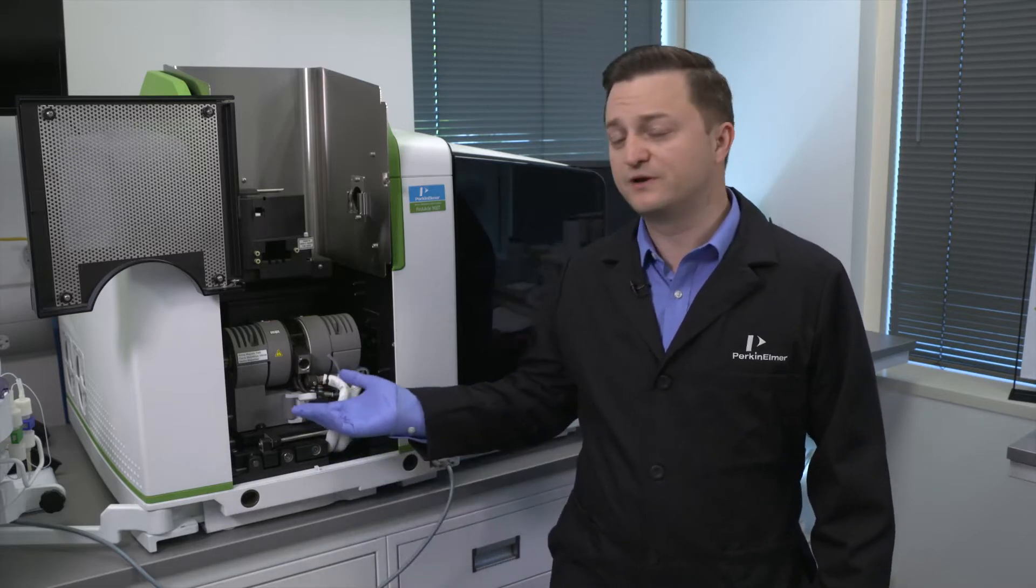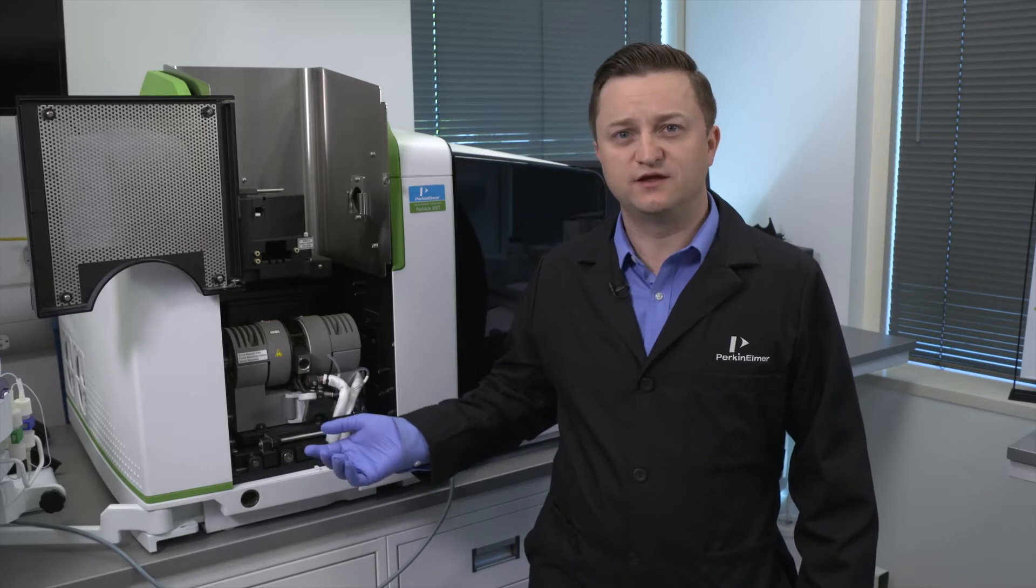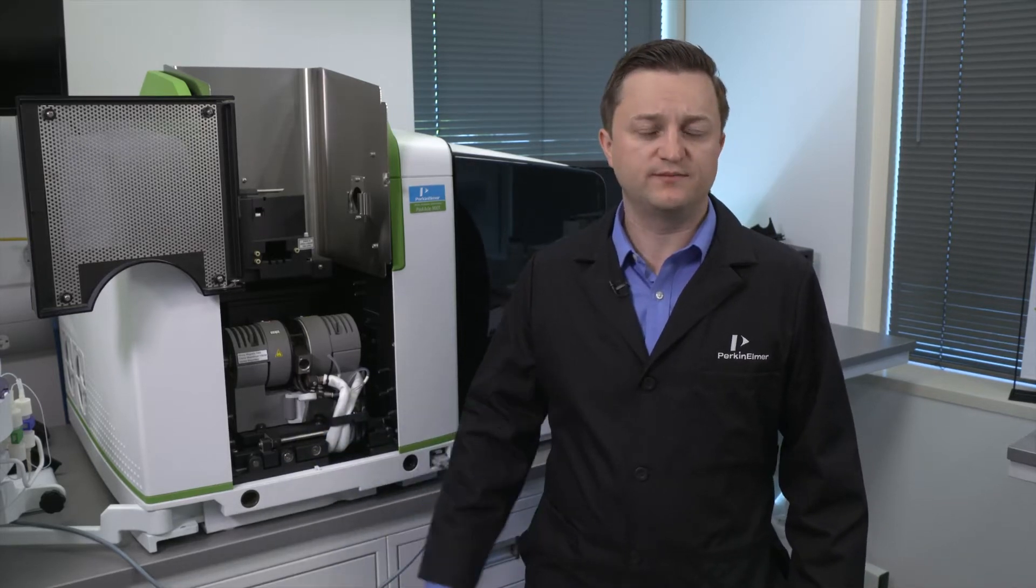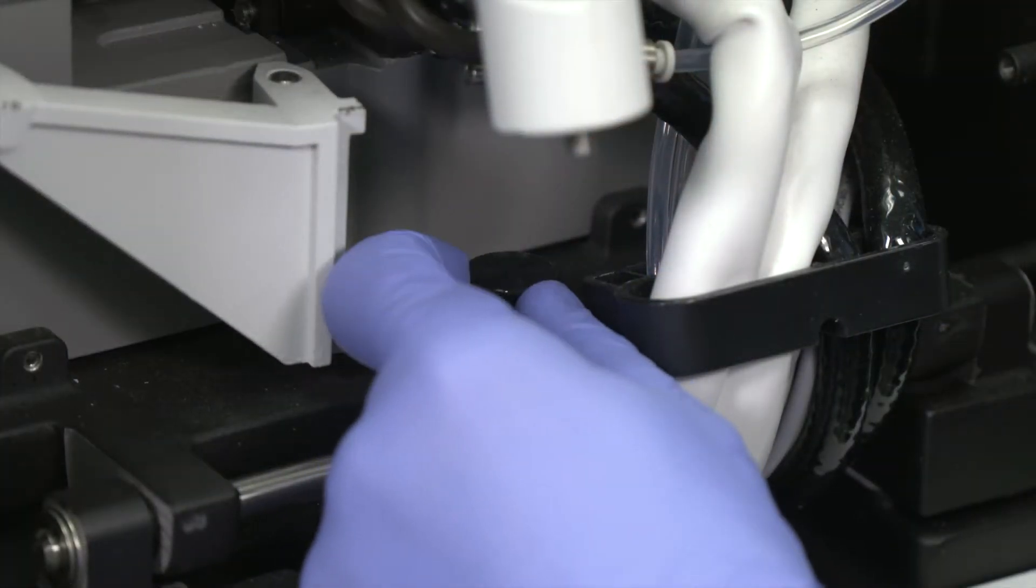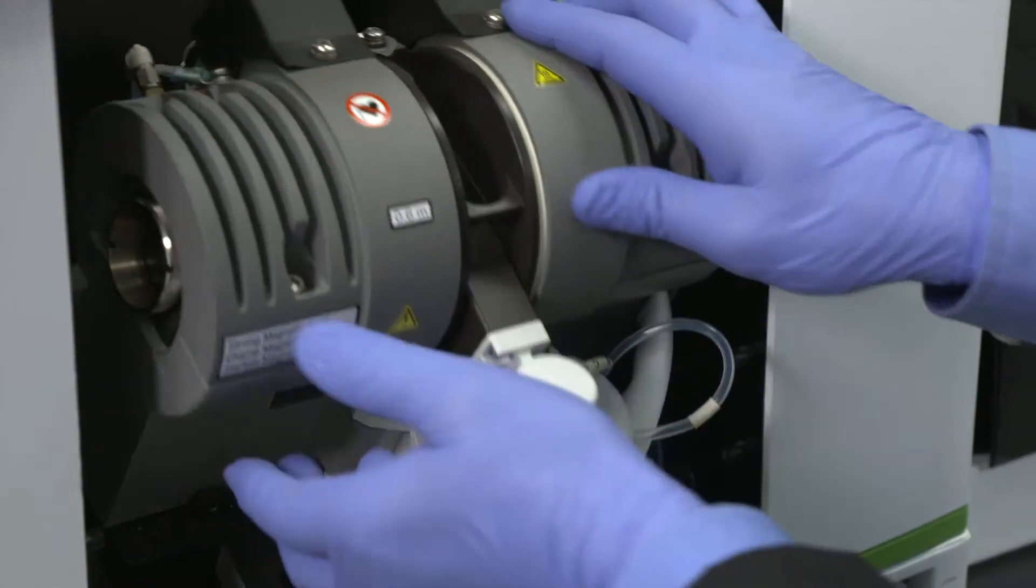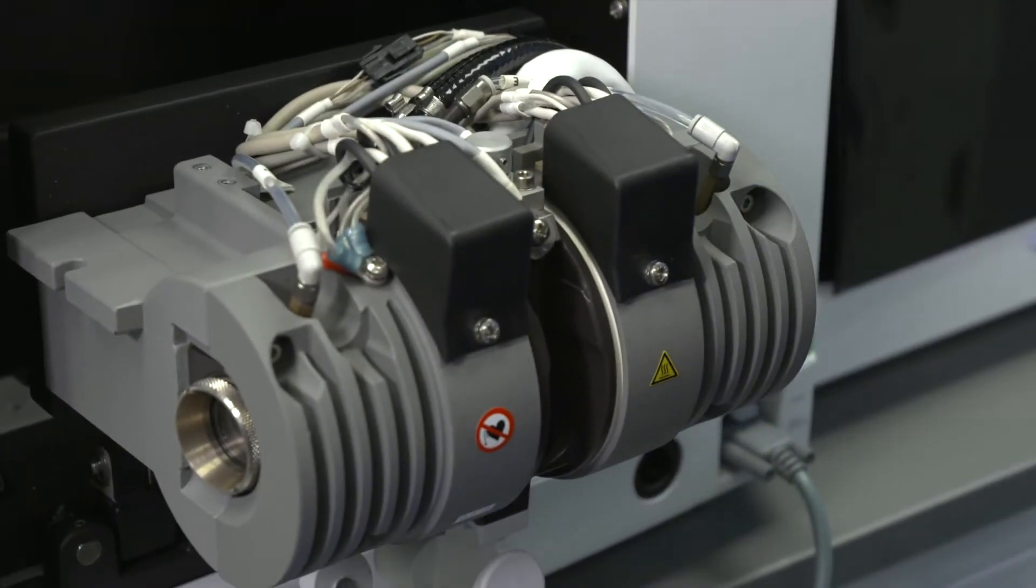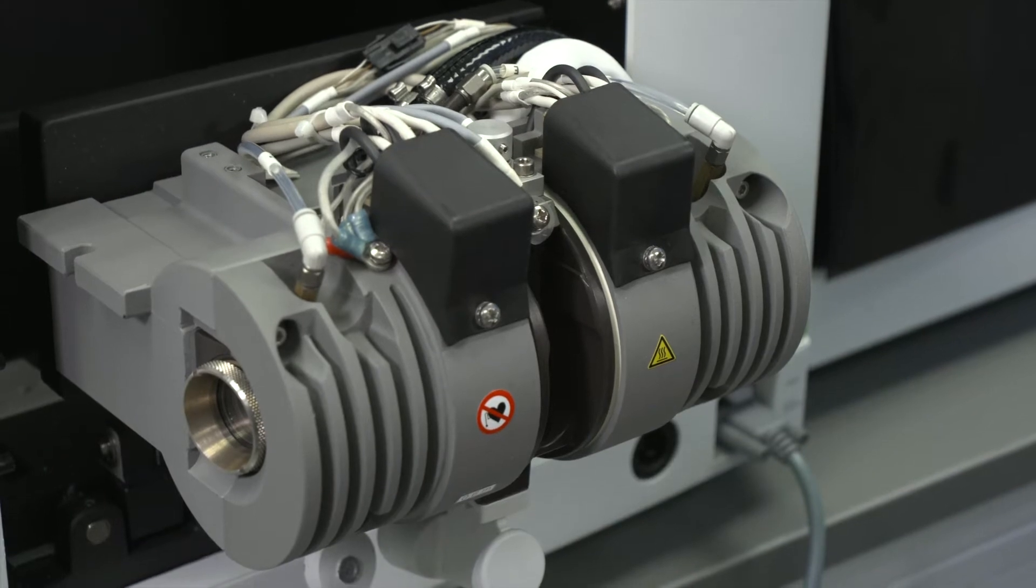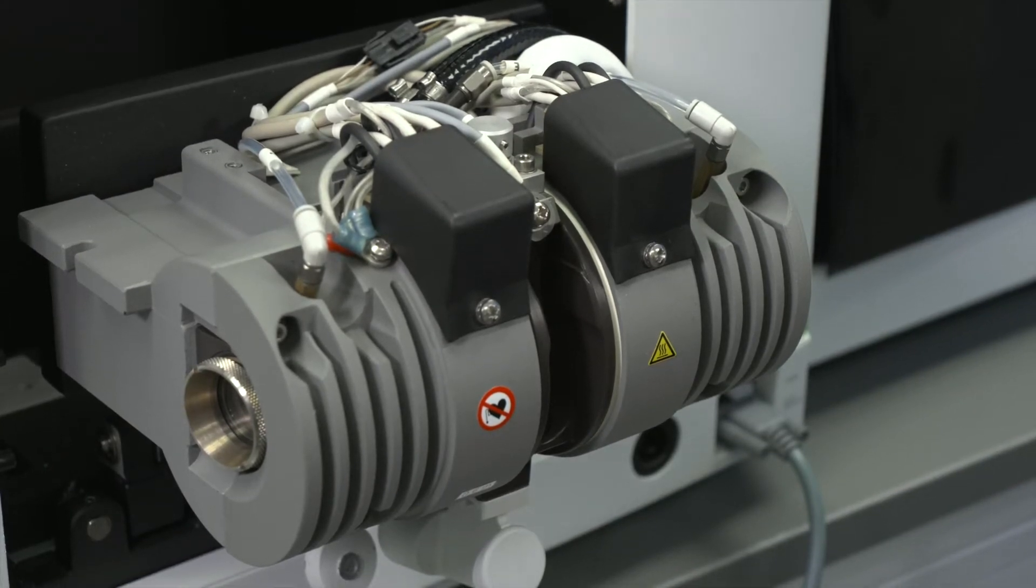I will show you how to reinstall the graphite furnace contact cylinders on the THGA instrument. The first step will be removing the previous contacts and tilting the graphite furnace forward so that the cylinders are accessible. Refer to my previous video on how to remove the contacts.